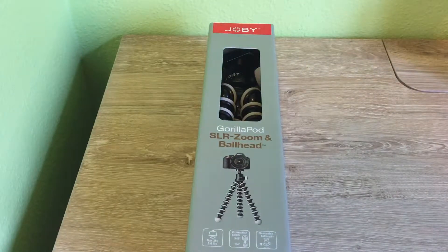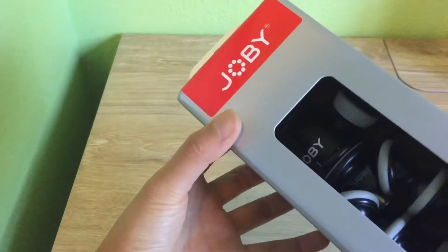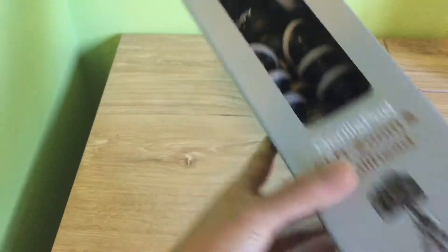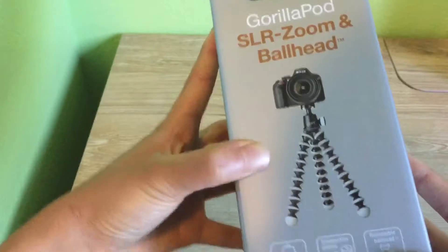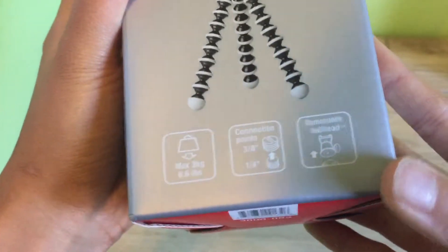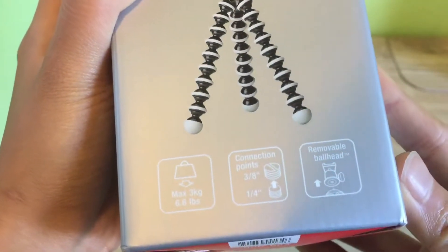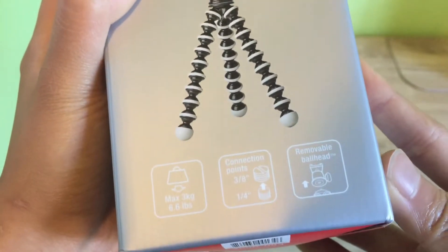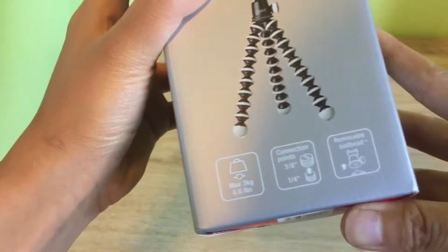First, let's start off with the box. So here's what it looks like. This is the front of the box. Here's the Gorillapod itself, a picture of what it looks like. Some information: it can hold up to 6.6 pounds. It has a new removable ball head so you can attach on and off.